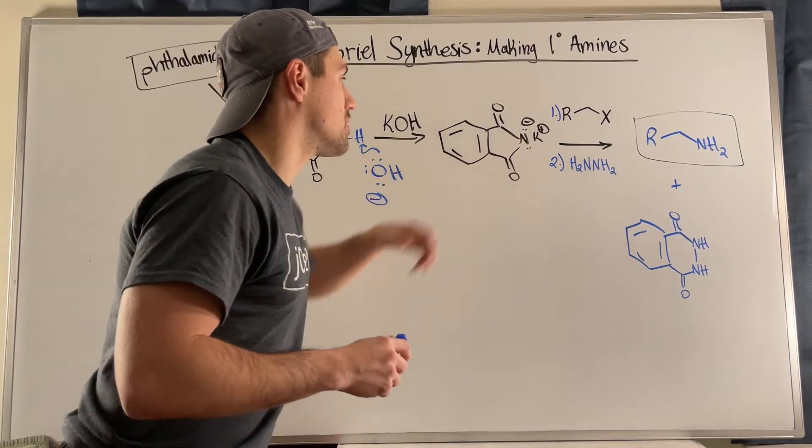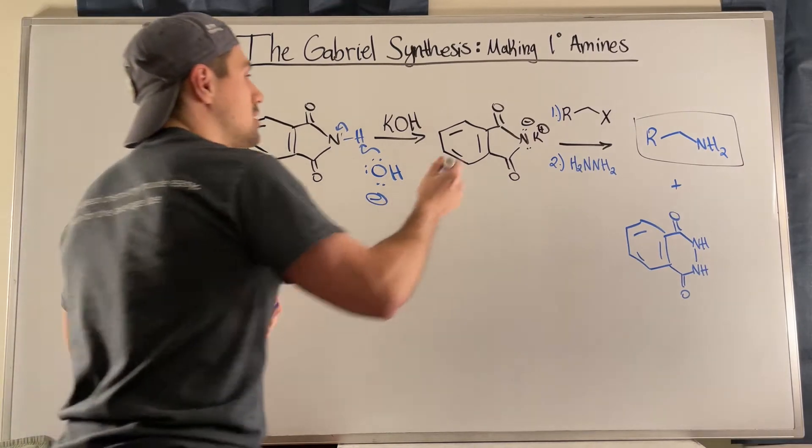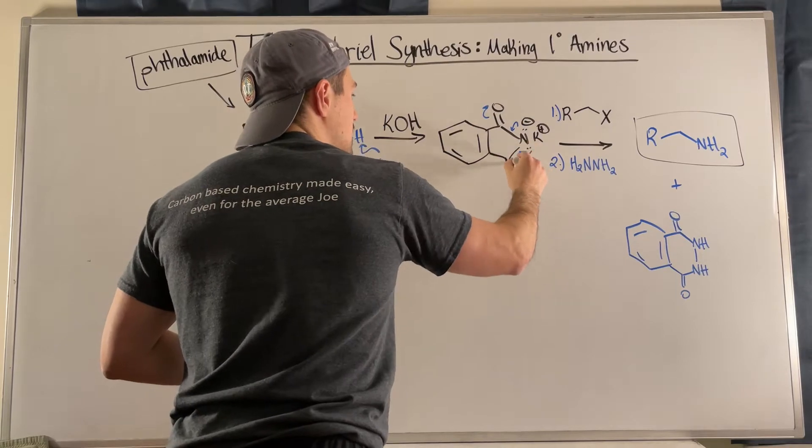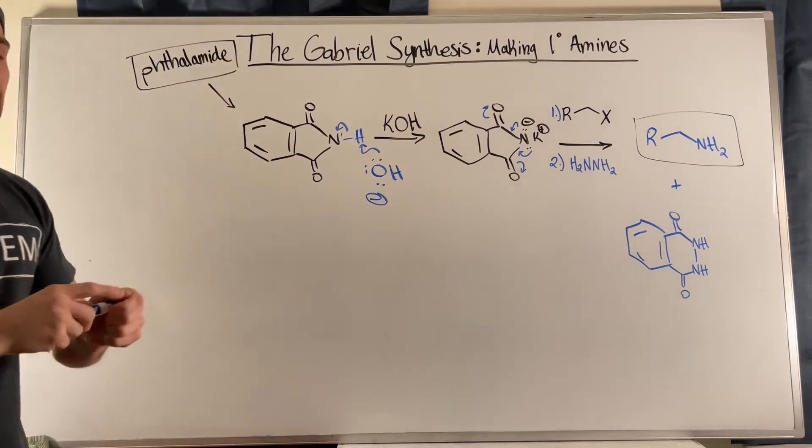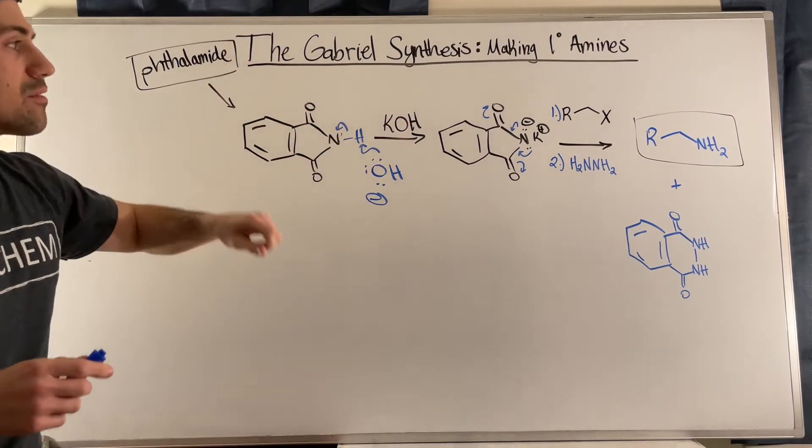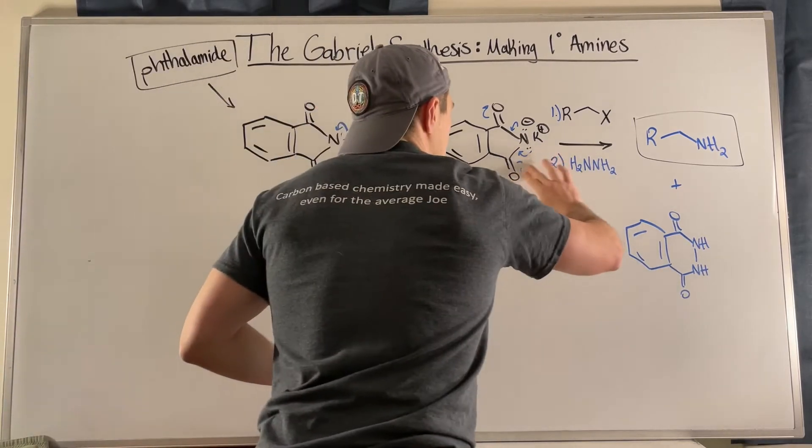That is very easily stabilized by resonance. You can see we have resonance up here, but we also have resonance down there. So very compelling reasons for this proton to get picked off, producing that negative charge. It's resonance stabilized, it's all good.